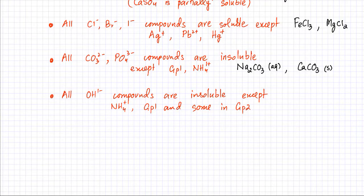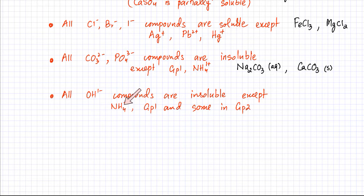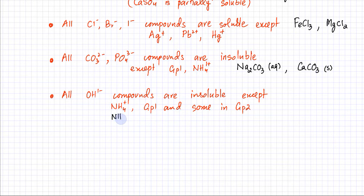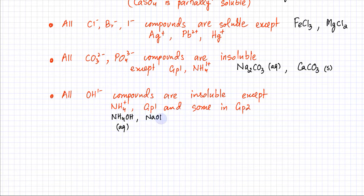The last rule about solubility is for hydroxides. All hydroxide compounds are insoluble, except for a few exceptions. If they contain ammonium ions, ammonium hydroxide is going to be soluble. Additionally, any Group 1 hydroxide — for example, NaOH — would also be in aqueous state and thus soluble.